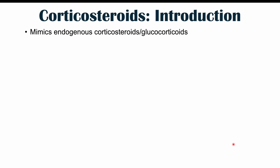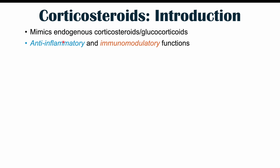Corticosteroids are medications like prednisone and methylprednisolone. They mimic endogenous corticosteroids or glucocorticoids — endogenous meaning that we create our own — and these come in the form of hormones like cortisol. Even in our body, cortisol has anti-inflammatory effects. But when we take them in the form of prednisone, we take them at higher doses for their anti-inflammatory and immunomodulatory functions.